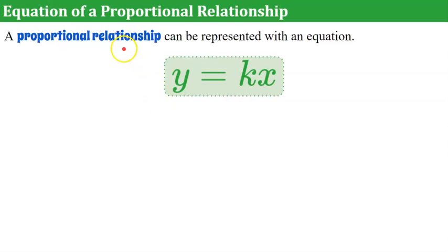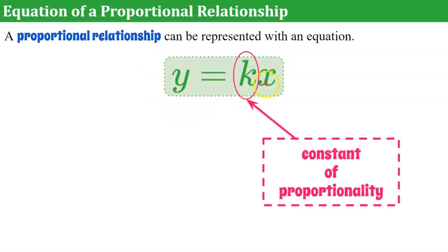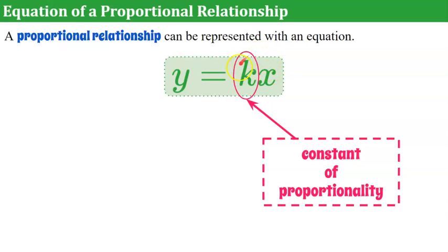A proportional relationship represented by a line on a graph can be written in this form using Y, K, and X, where K represents the constant of proportionality. This is probably your first introduction to a linear equation — it's the equation of a line. X is the input and Y is the output. You always have Y equal to a value times X, and this value is your constant of proportionality.